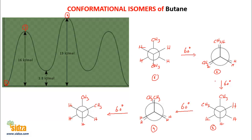A 60-degree rotation from partial eclipsion gives the gauche conformation, which is more stable than the eclipsed but less stable than anti because the two methyl groups are a little closer. A further 60-degree rotation from gauche gives a fully eclipsed conformation. Then another 60 degrees gives gauche again, and another 60 degrees gives partial eclipsion — so you can interconvert the different conformational isomers this way.